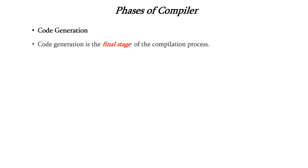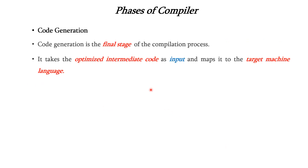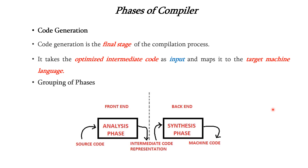The last phase is code generation. It takes the optimized intermediate code as the input and generates the target machine code as the output. These six phases are grouped into two phases: the analysis phase and the synthesis phase. In the analysis phase we have from lexical analyzer to intermediate code generation, and in the synthesis phase we have from intermediate code to code generation. The analysis phase is considered the front end and the synthesis phase is considered the back end. Source code is given to the analysis phase and the synthesis phase will generate the machine code.